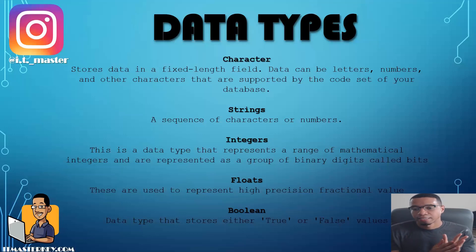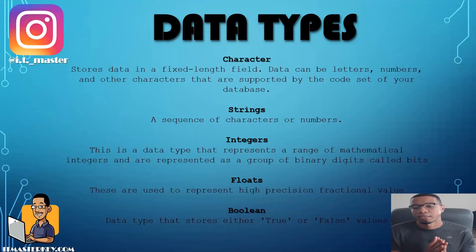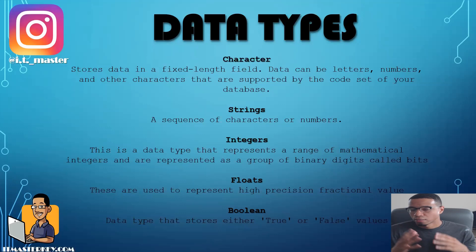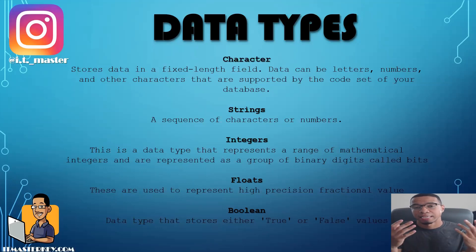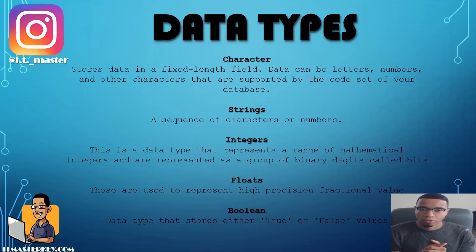Next up is integers. This data type represents a range of mathematical integers and are represented as a group of binary digits called bits. Quick quiz — in our first video, we talked about binary. Binary is simply the language of devices; it's how computers actually talk to each other — the ones and zeros.